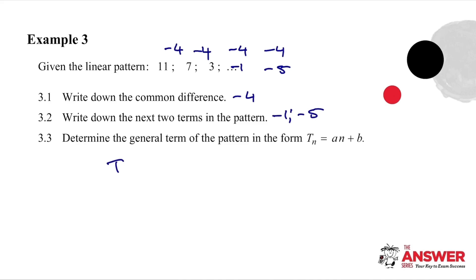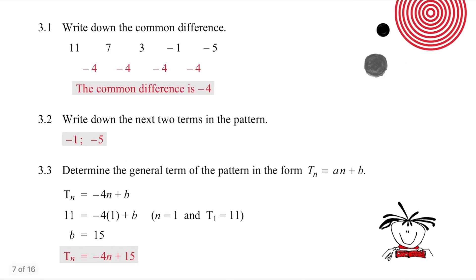Then to form the general term, we're going to use the exact same process, coefficient in front of n is the common difference. Now we know that the first term value is 11. So 11 is equal to minus four plus b, and therefore b is equal to 15. So tn is equal to minus four n plus 15. Pause the video if you need a second look.